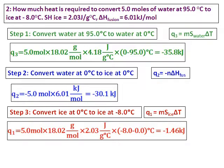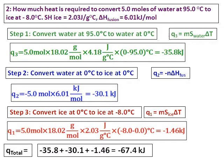The total heat is negative because this process is the opposite of what we did before. Previously we converted solid to liquid to gas; here we are converting liquid to solid. When liquid becomes a solid, bonds are formed, and whenever bonds are formed, energy is released — so as expected, the value of heat is negative.